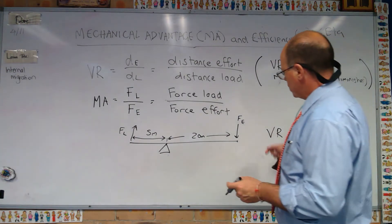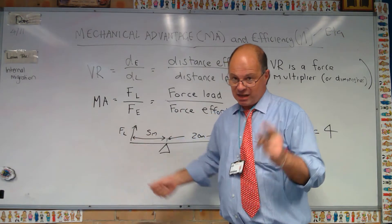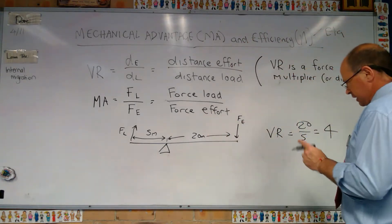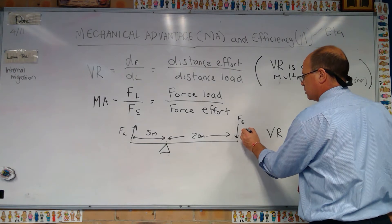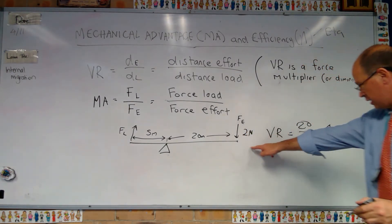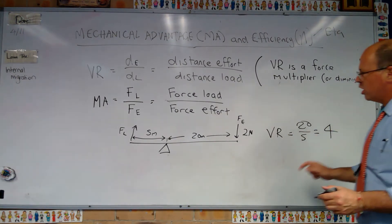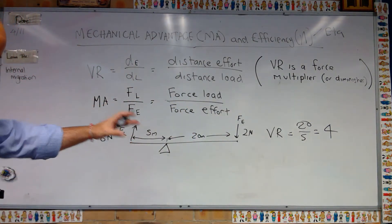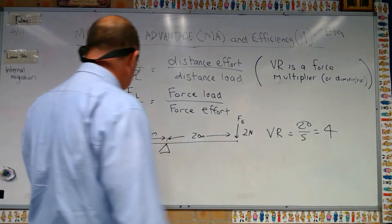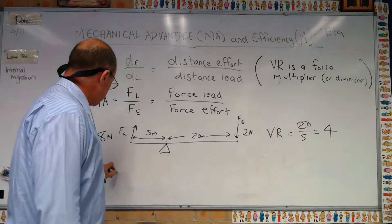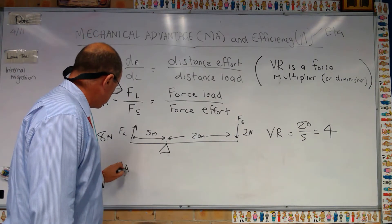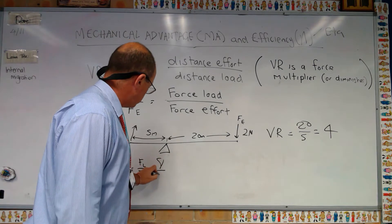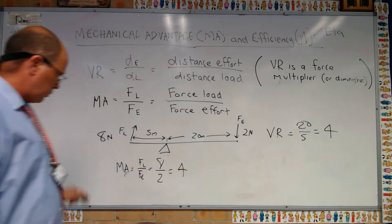A VR of 4 means that whatever force we put in, we'll get four times as much out — if the machine is 100% efficient. So if we put in 2 newtons of force, we get 8 newtons at the load. Looking at the MA equation: MA equals force load over force effort, which is 8 over 2, which equals 4. So MA and VR are equal in this case.